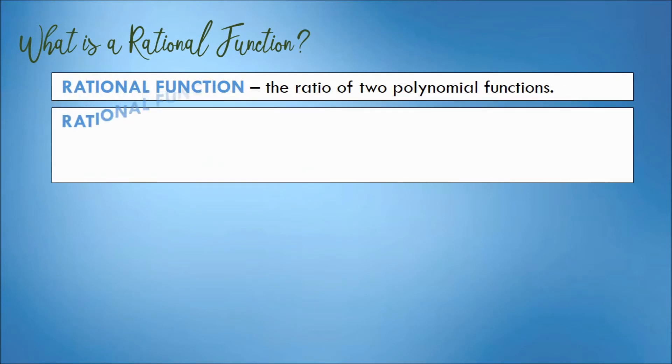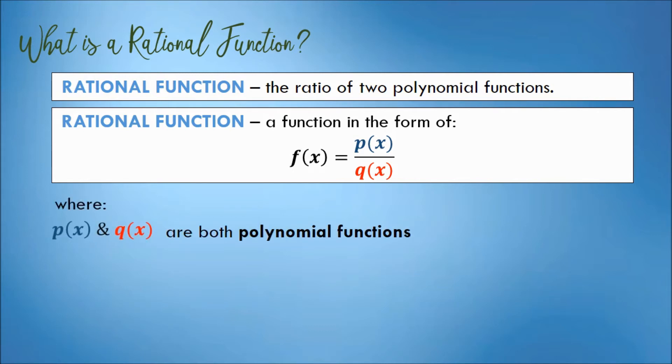Here is the definition. A rational function is defined as a function in the form of f(x) equals p(x) over q(x), where p(x) and q(x) are both polynomial functions.